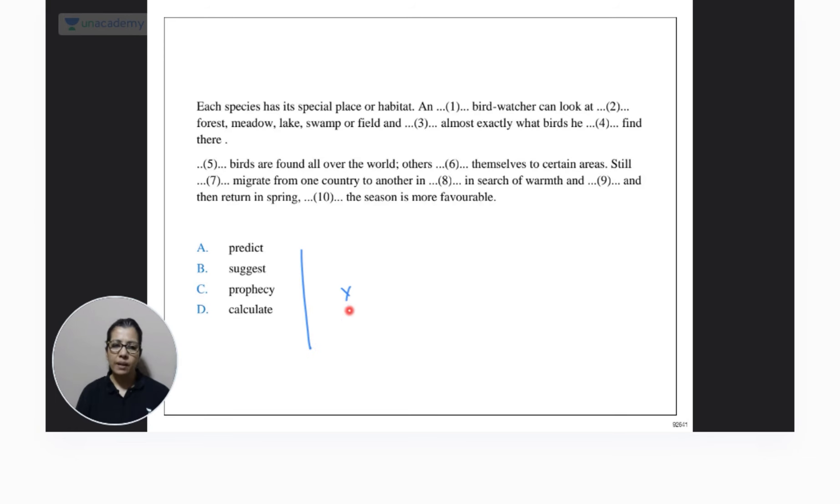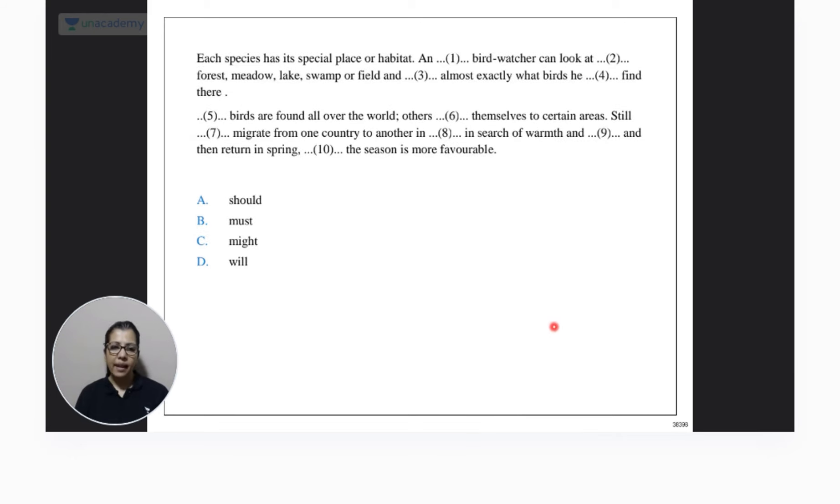Forest here you simply have to eliminate. Great, this one was clear right? Sakshi, Summer, Sonia, Pranali, Manas. Good. He can predict exactly. Usko kaunsi birds waha milne wali hai ya kaunsi dikhne wali hai. What birds he dash find there.